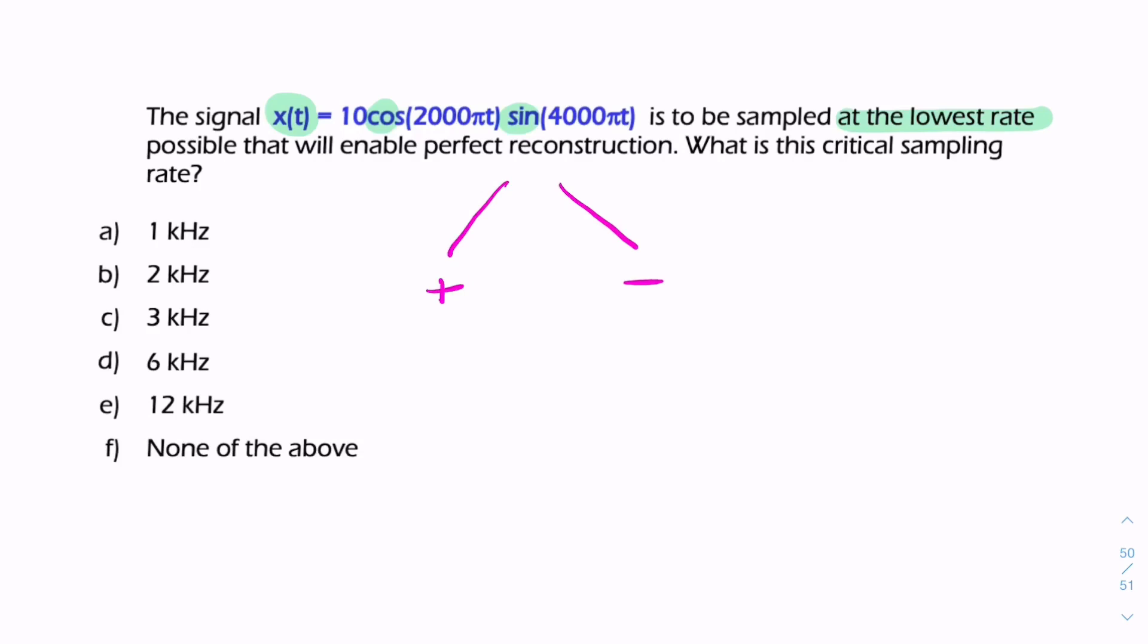Because we're interested in the Nyquist rate, we're interested in the highest frequency component, which will come from the sum term. So your resulting frequency, let's call it omega_m, will be the sum of the 2000π plus the 4000π, so that's 6000π.